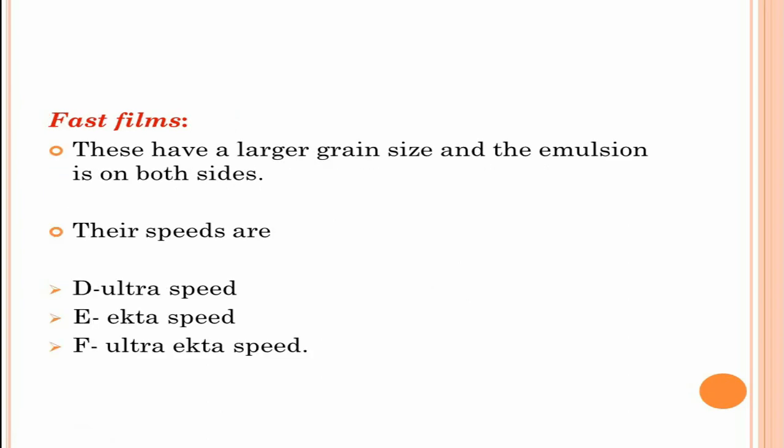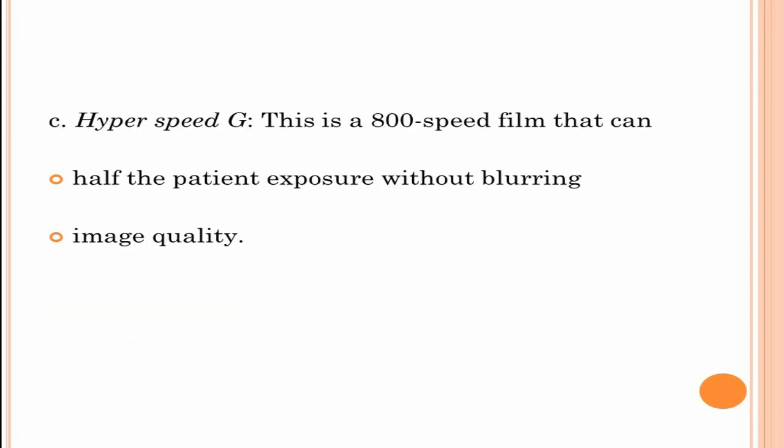Fast films have larger grain size and emulsion present on both sides of the base. Their speeds are D, ultra speed; E, ecta speed; and F, ultra ecta speed. A hyper speed G film is also available. It is an 800 speed film that can halve the patient exposure without blurring with improved image quality.